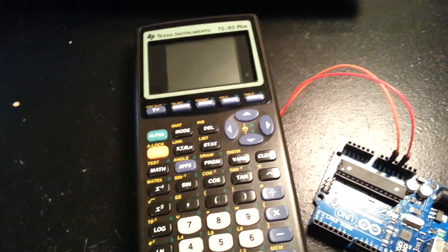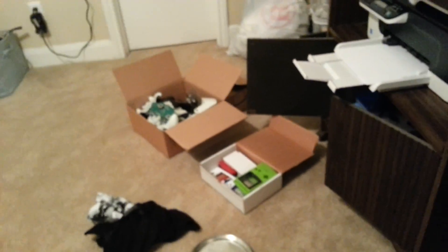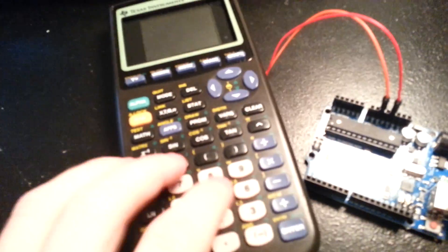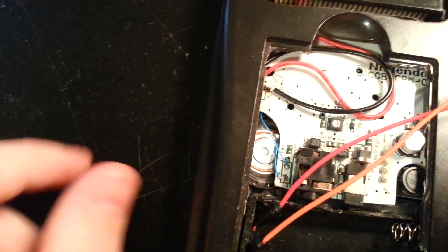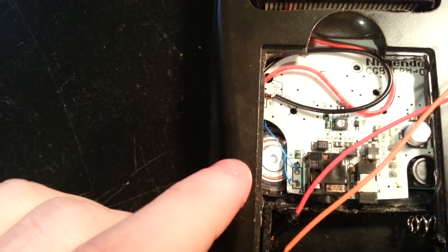I ditched the Game Boy Color speaker because it was too fat, but since then I've gone through quite a bit of Xboxes and Game Boys. So now I have a Game Boy Advance SP speaker in here, and it's right there. Super easy, just those two wires going straight to that speaker.